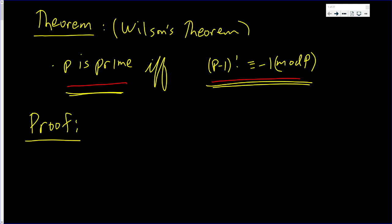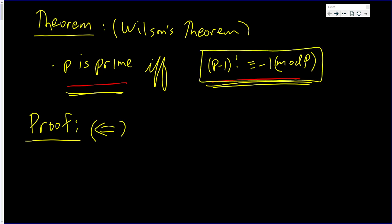I'd like to prove Wilson's Theorem at the very end. So let us do it to the left — that is, we're going to assume that p minus 1 factorial is congruent to negative 1 mod p, and then conclude that p is prime.